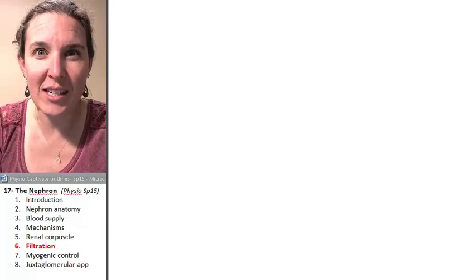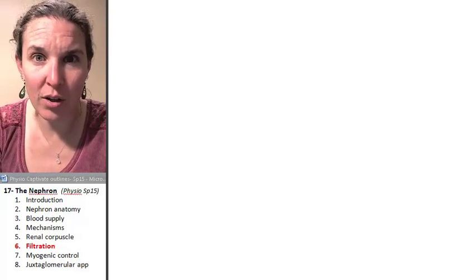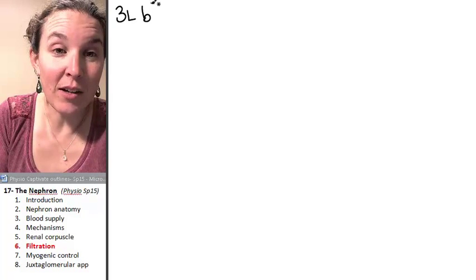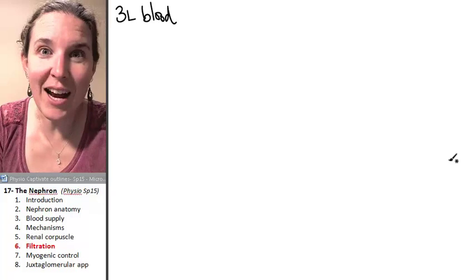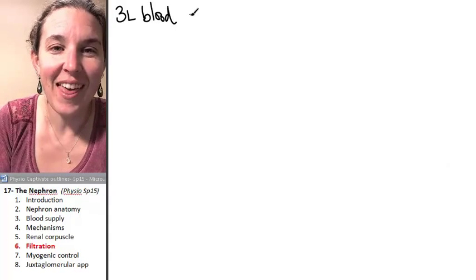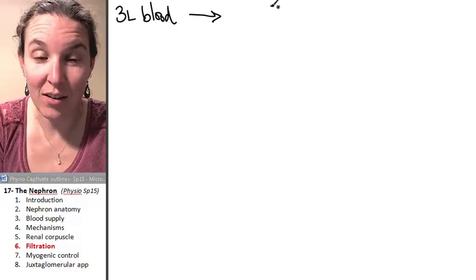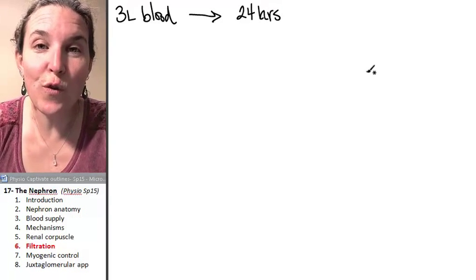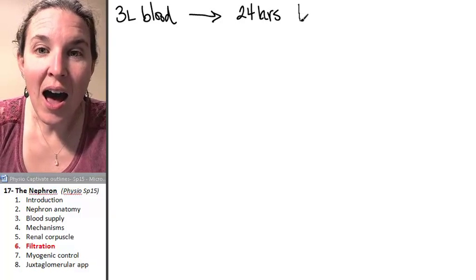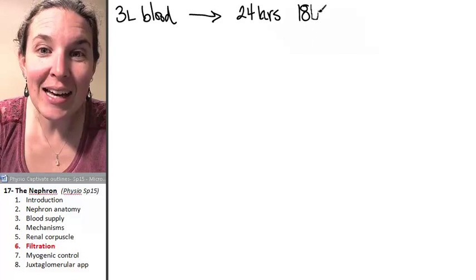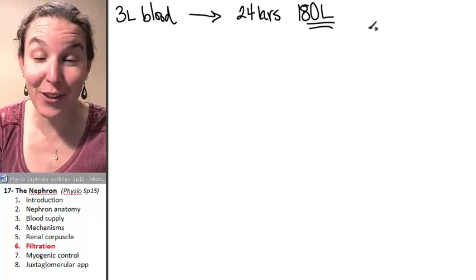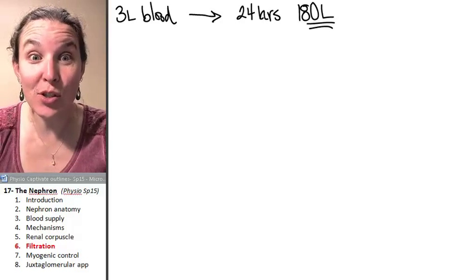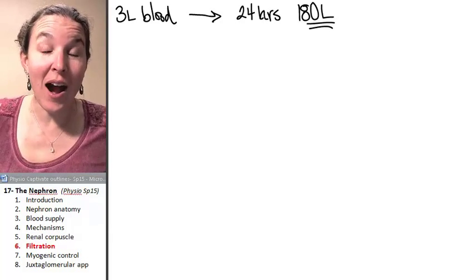And are you ready for the craziest fact ever? You have three liters of blood in your body. Isn't that crazy? Just kidding. That's not the craziest fact ever. However, in 24 hours you filter 180 liters of fluid out of your blood and into Bowman's capsule every 24 hours.